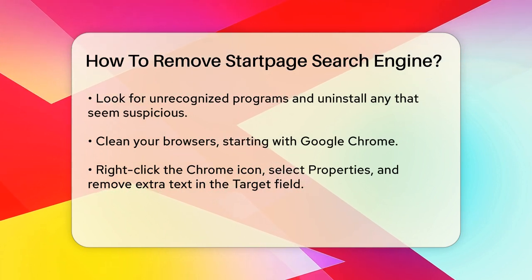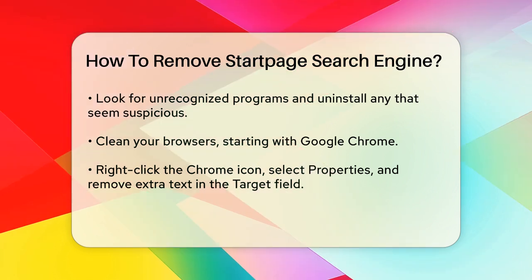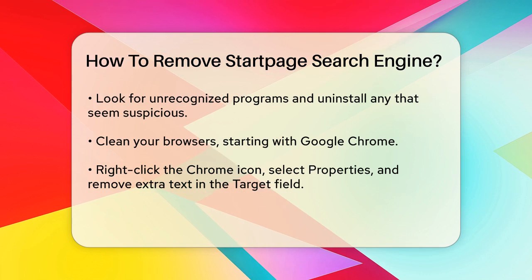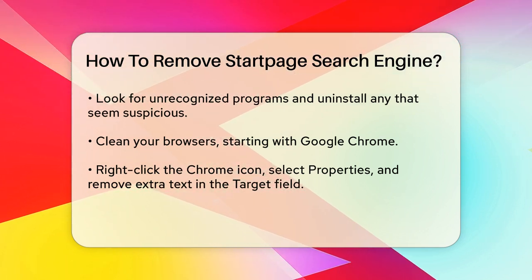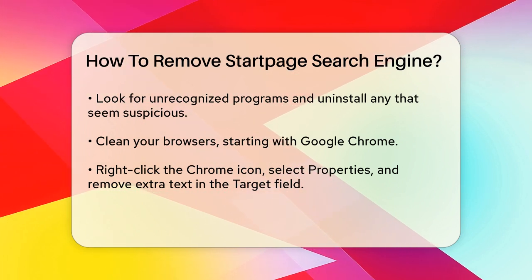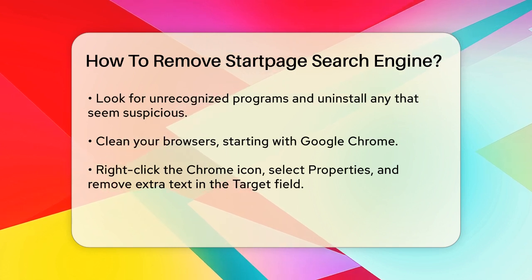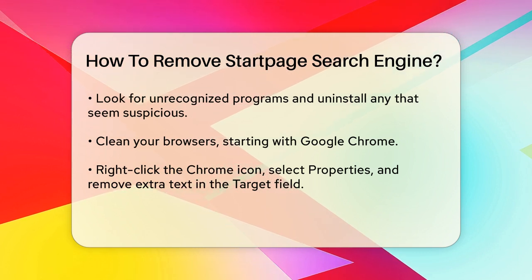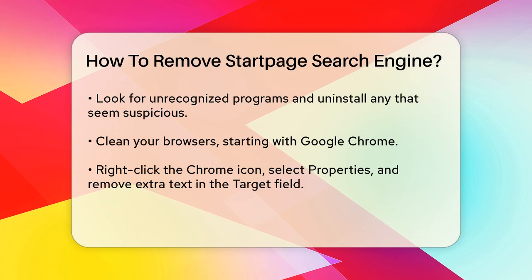Cleaning your browsers. Next, you need to clean up your browsers. Let's start with Google Chrome. Right-click on the Chrome icon, select Properties, and go to the Shortcut tab. Make sure to delete anything written after the .exe in the Target field. Open Chrome, go to the main menu in the top right corner, select Settings, and scroll down to Show Advanced Settings. Click on Clear Browsing Data and clear all the data to be sure. Now go to the Extensions section in the left pane, look through all the extensions, and disable and remove any suspicious add-ons.